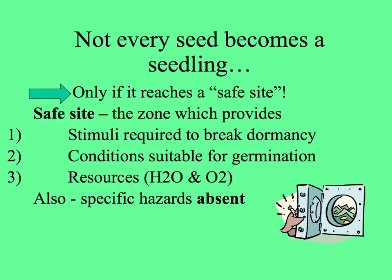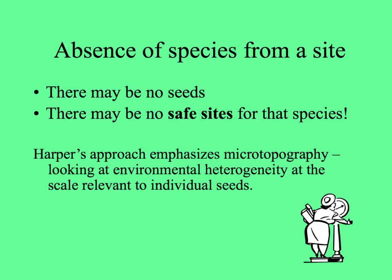Light, of course, water and oxygen, and seed predators should be absent or at least have missed that seed that's going to germinate. There are two main reasons a species may not occur in a given site: there might be no seeds of that species present, or there may be no safe sites for that species.